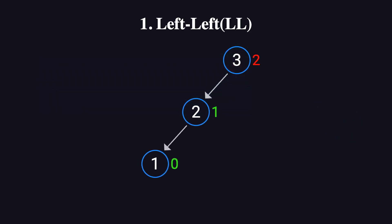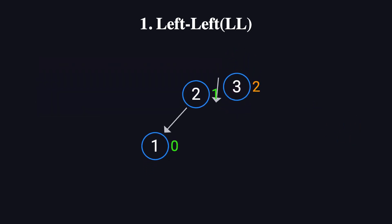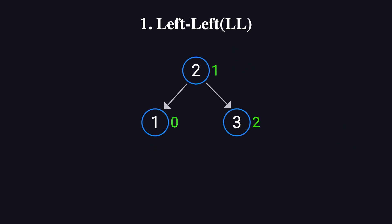To fix this, we perform a right rotation. In a right rotation, we rotate node 3 down to the right. Now node 2 becomes the new root, node 3 becomes the right child of node 2, and node 1 remains as the left child of node 2. After the rotation, the balance factors of all three nodes are reset to 0, and the tree is balanced again.